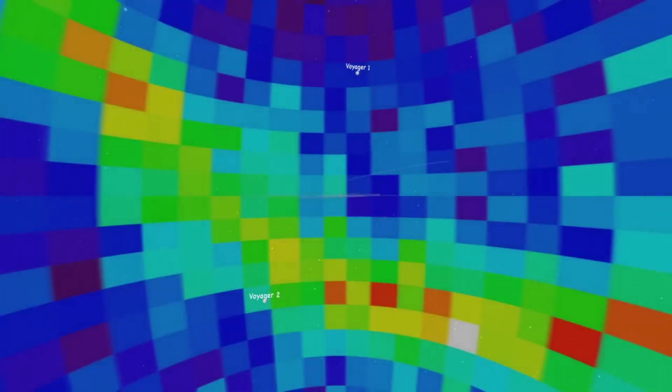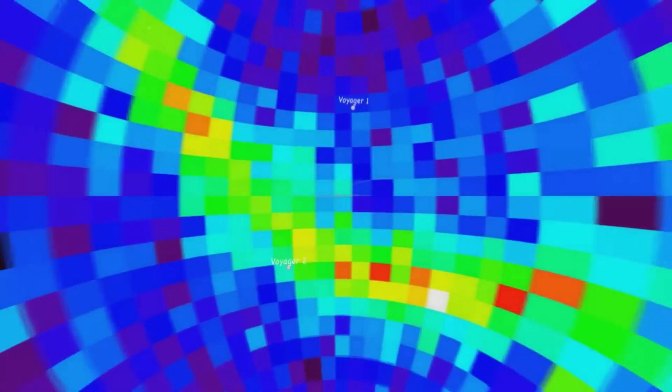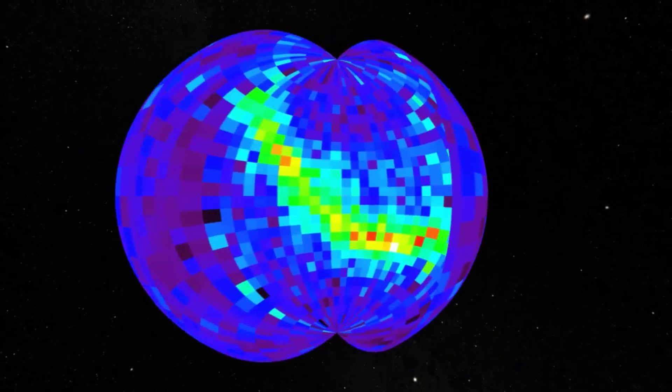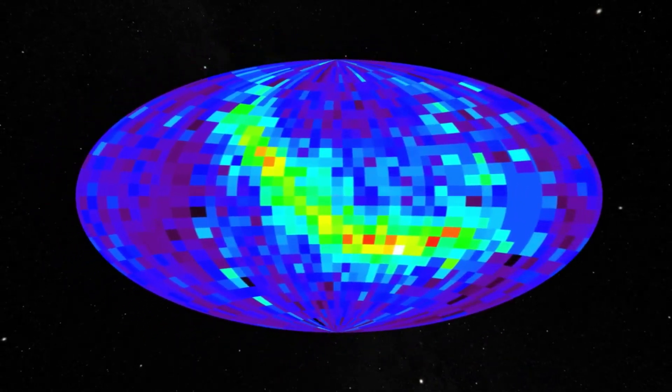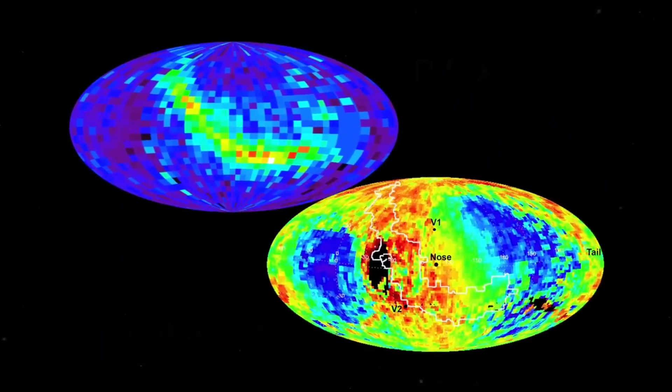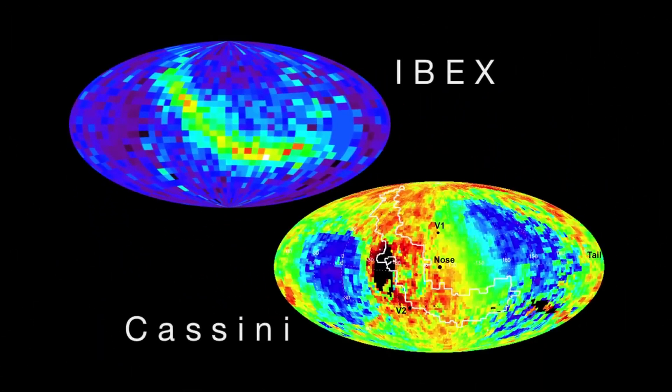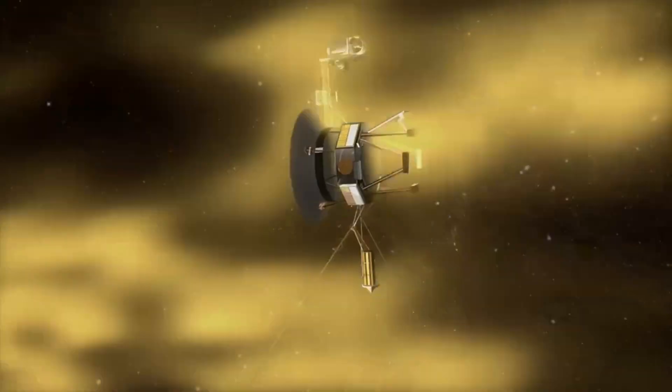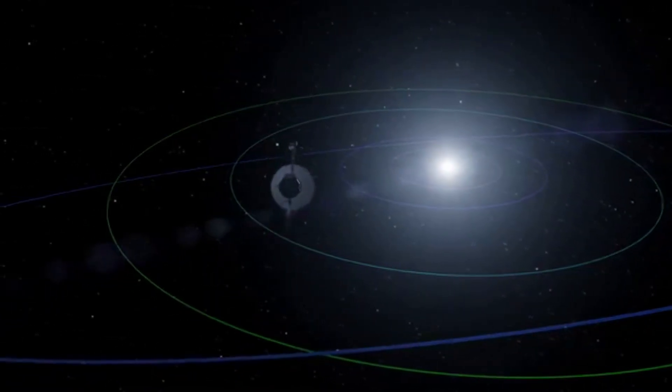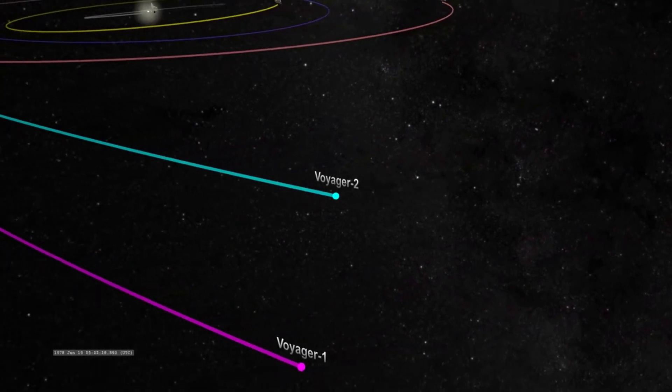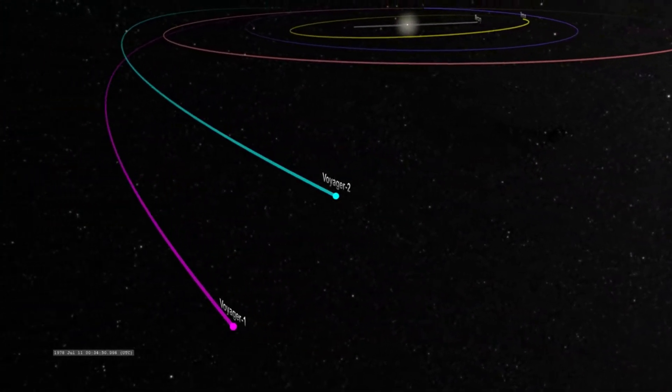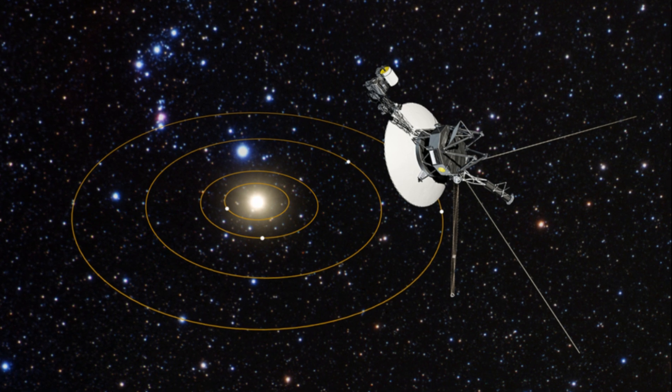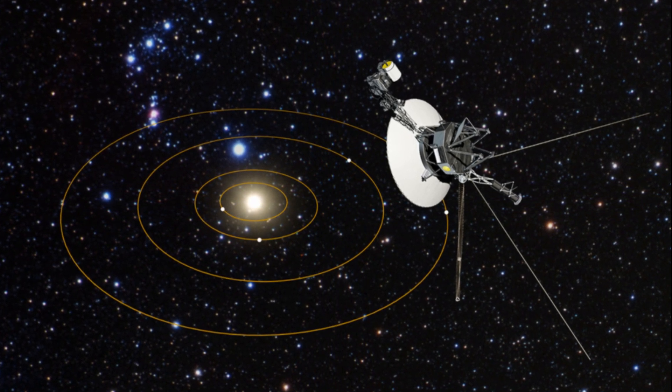There still is a lot to learn about the region of interstellar space immediately beyond the heliopause, said Ed Stone, Voyager project scientist based at Caltech in California. Together, the two Voyagers provide a detailed glimpse of how our heliosphere interacts with the constant interstellar wind flowing from beyond. Their observations complement data from NASA's Interstellar Boundary Explorer, a mission that is remotely sensing that boundary. Voyager has a very special place for us in our heliophysics fleet, said Nicola Fox, director of the heliophysics division at NASA headquarters. Our studies start at the sun and extend out to everything the solar wind touches. To have the Voyagers sending back information about the edge of the sun's influence gives us an unprecedented glimpse of truly uncharted territory.